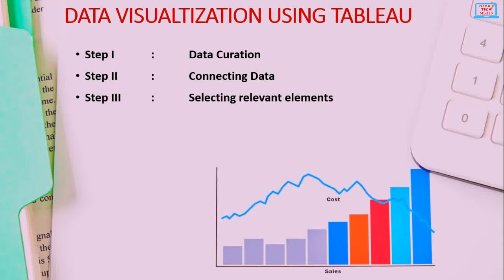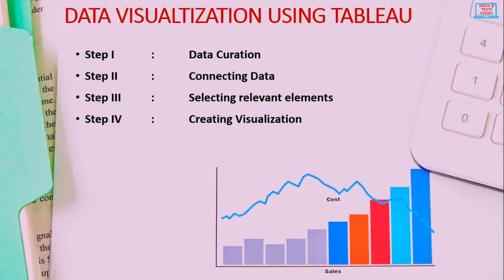Step 3 is selecting relevant elements. The selected data might contain a lot of data on different elements, many of which may not be relevant for the problem. Users have to select data elements that are relevant, depending on the goals and objectives of the project. Step 4, the final step, is creating the visualization — the actual visualization of data using graphic tools.